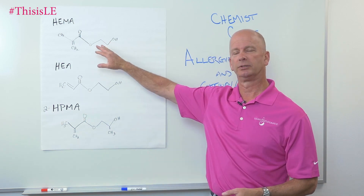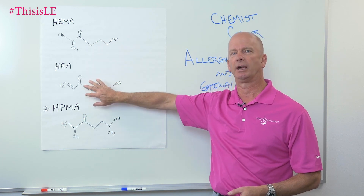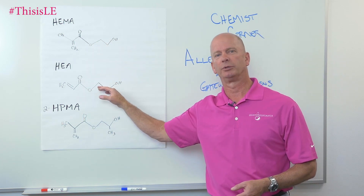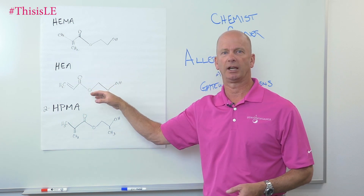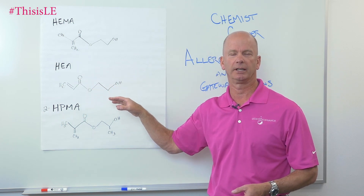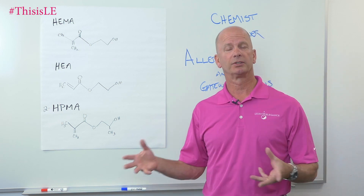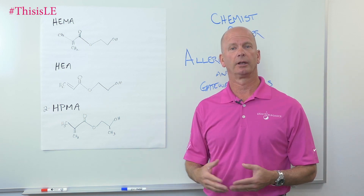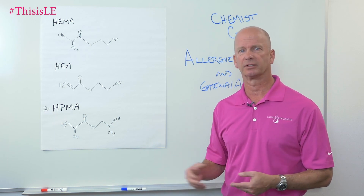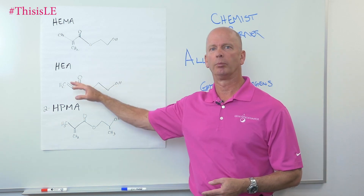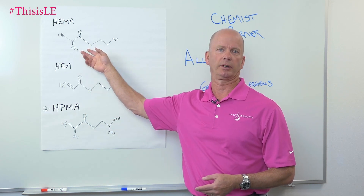I'm going to use the examples of HEMA and HEA. Some of the products that we bring in from China might contain HEA, hydroxyethylacrylate. HEA is a really good raw material and it builds some of the oligomers that we use. An oligomer is a semi-polymerized material — a thick, viscous liquid that we use to help build some of those materials. HEMA is also one of those products.